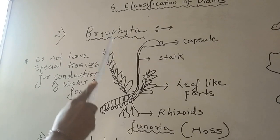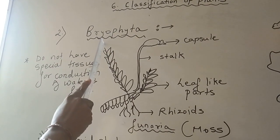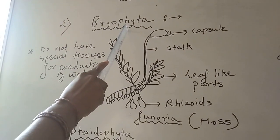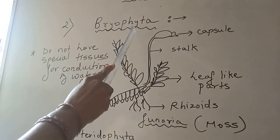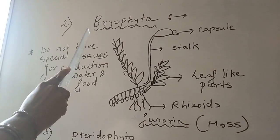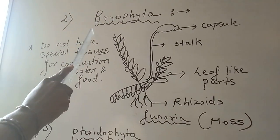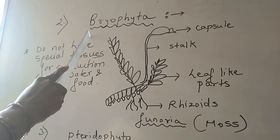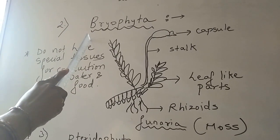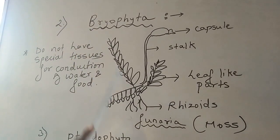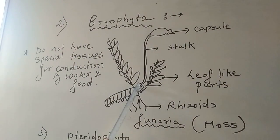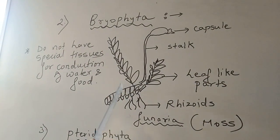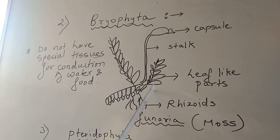What are the characteristics of Bryophyta? The first characteristic: this group of plants are called as amphibians. Why are they called amphibians? Because they grow in moist soil as well as they also need water for reproduction.